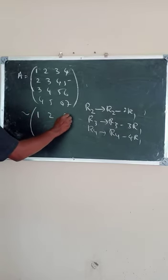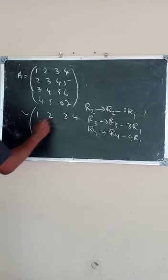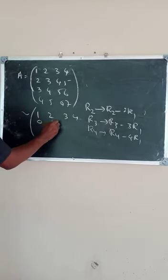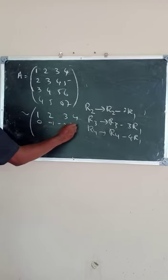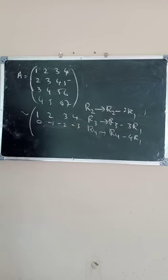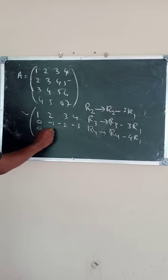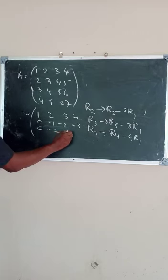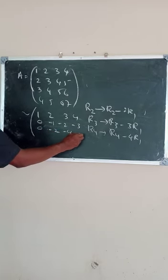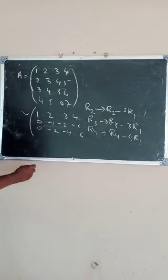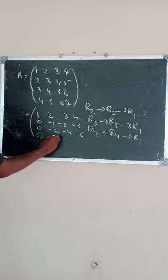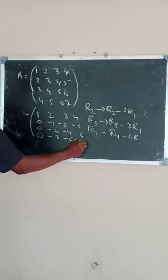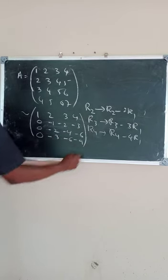That gives us: Row 1: (1, 2, 3, 4); Row 2: (0, −1, −2, −3); Row 3: (0, −2, −4, −6) — wait, (0, −2, −3, 0) — Row 3: (0, −2, −3, 0); Row 4: (0, −3, −6, −9).